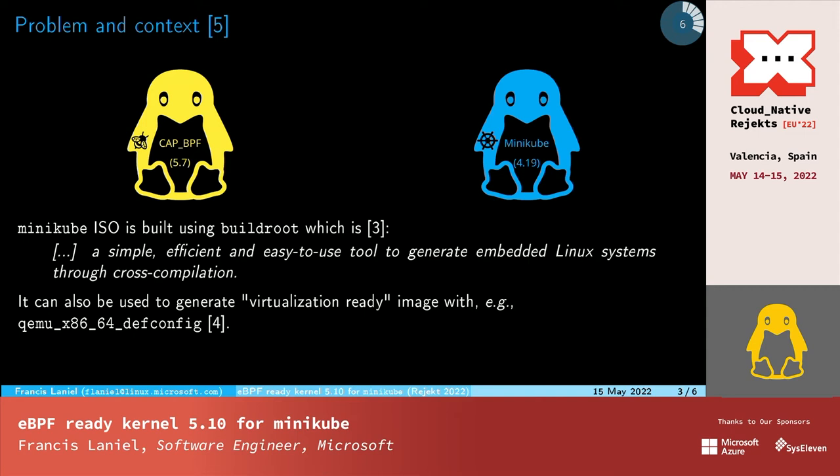To build the Minikube image, Minikube uses BuildRoot. BuildRoot is, according to their website, a simple, efficient, and easy-to-use tool to generate embedded Linux systems through cross-compilation.